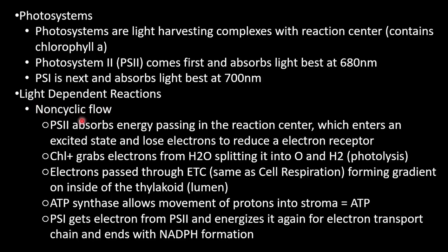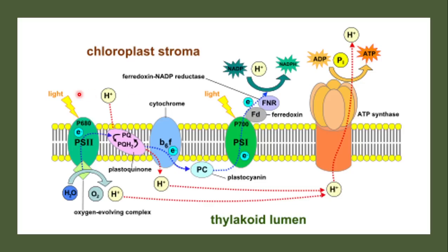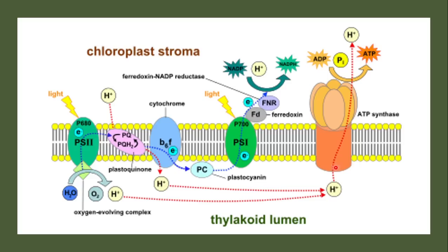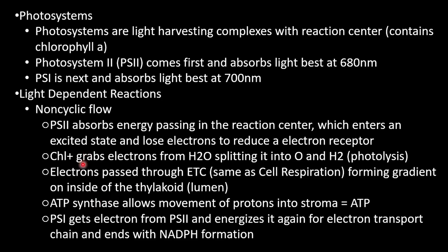In the non-cyclic pathway, Photosystem II absorbs energy and passes it to the reaction center — chlorophyll a — which enters an excited state and loses an electron to reduce an electron receptor. Light strikes the chlorophyll, releasing an electron that moves through the electron transport chain. Since chlorophyll has lost an electron (oxidation), it grabs an electron from H2O, splitting it into oxygen and hydrogen. This is called photolysis, and it's why water is necessary for plants.